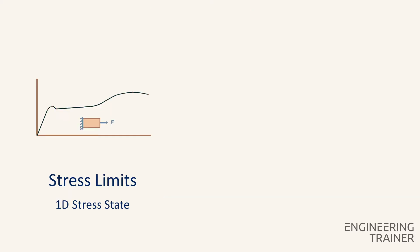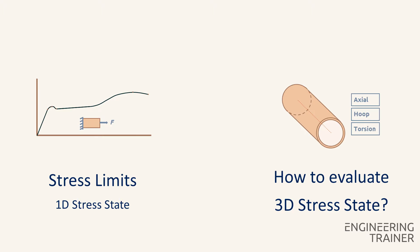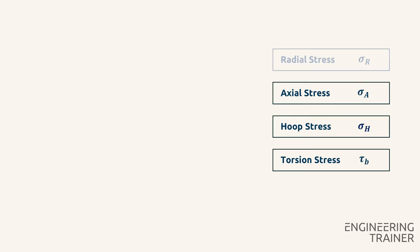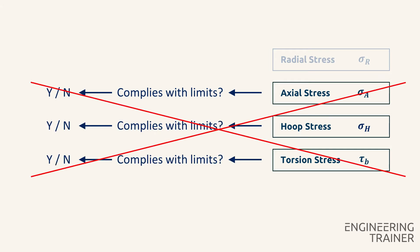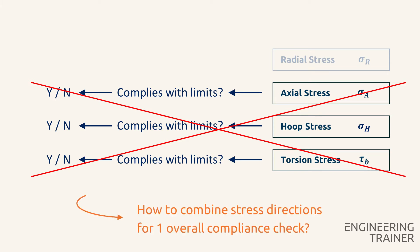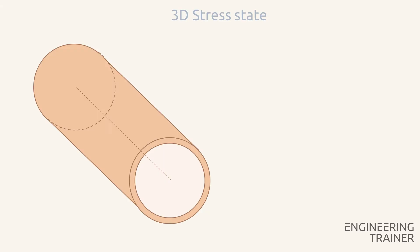So if we find the limits from a 1D stress state, how can we evaluate the 3D stress state in the piping? One might think we can just check if each stress direction complies with the limits, but this is incorrect, since the stress in one direction can influence the margin available for stresses in another direction. So how do we combine the stress directions for one overall compliance check? To answer this, we take a closer look at the 3D stress state in the material.